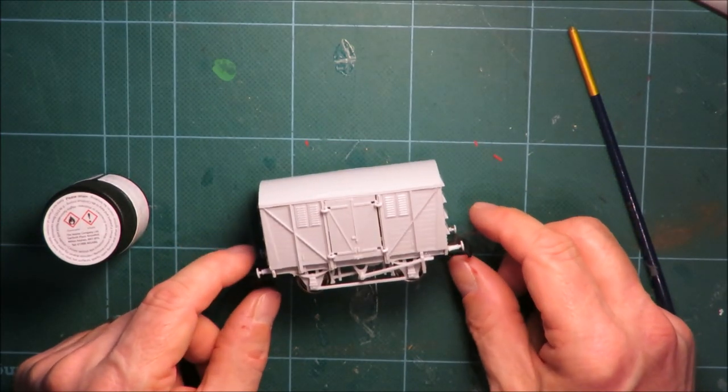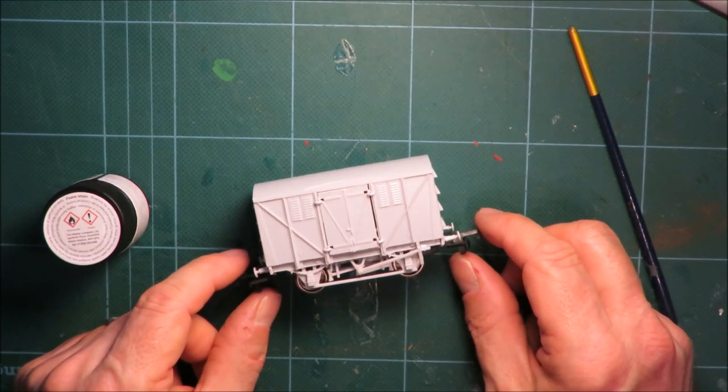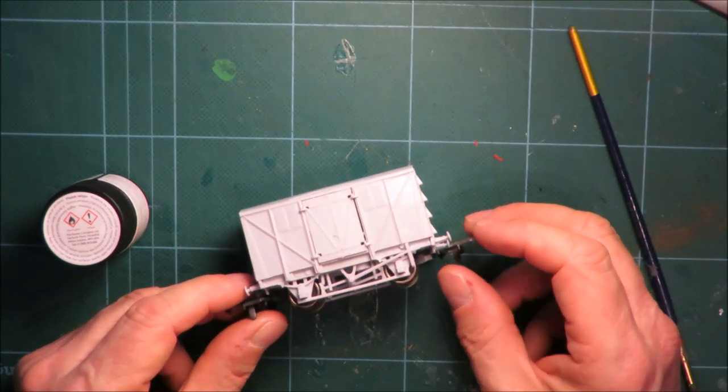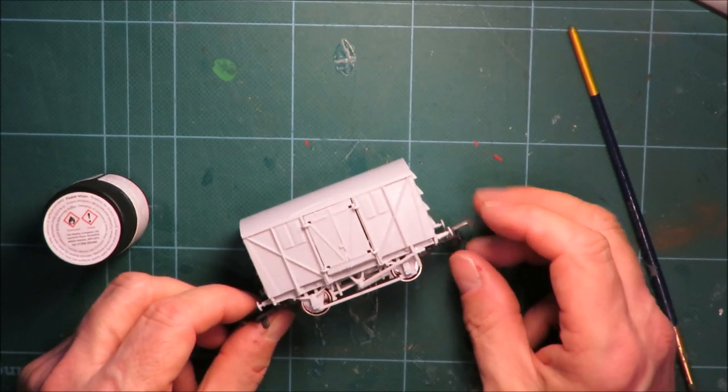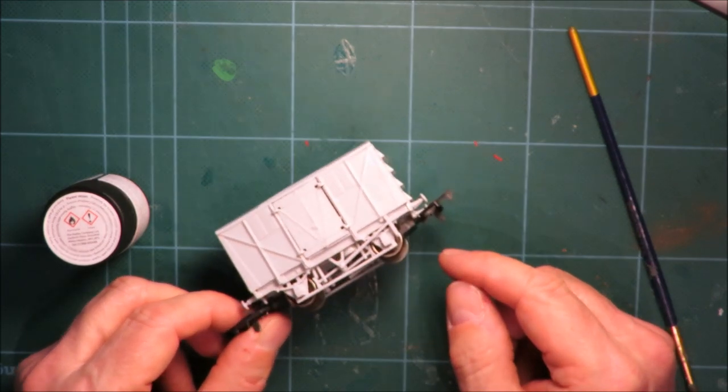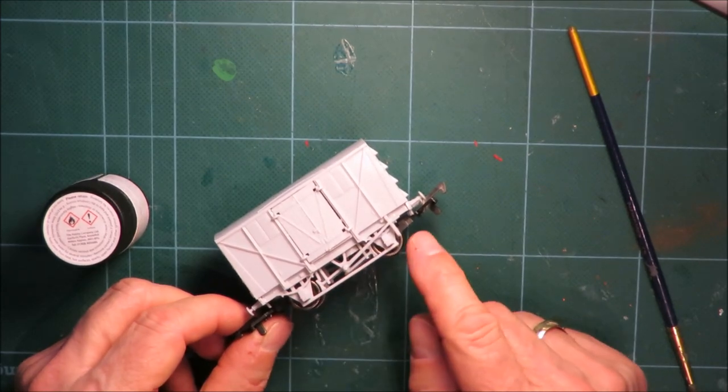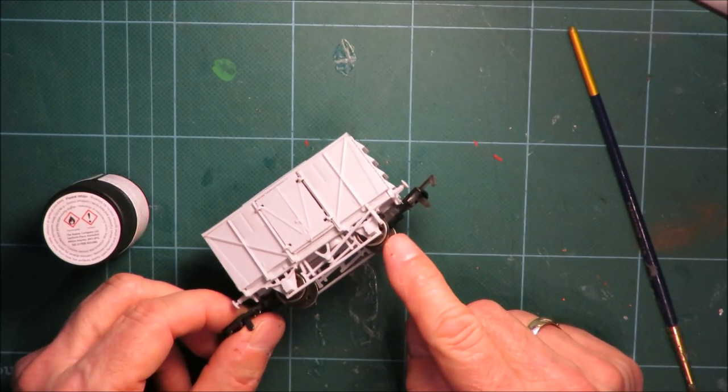So here we are, part two. Thank you for all the people that watched part one and commented. Now we're going to have a go at painting the wagon. I have to say right from the very beginning, we made a little error to make the video, which is that all this underframe would have been much better painted black before you stuck it together.